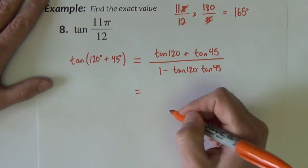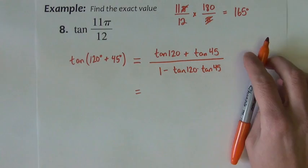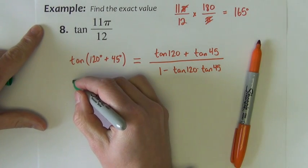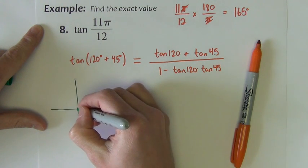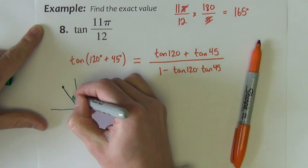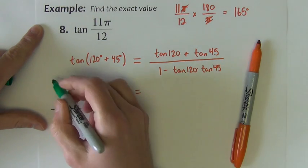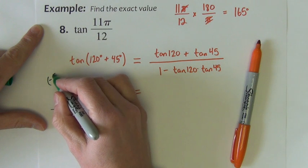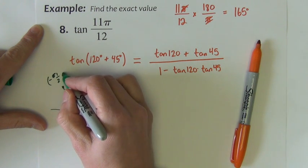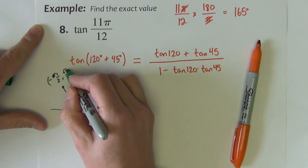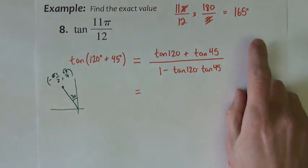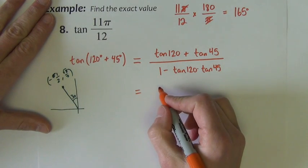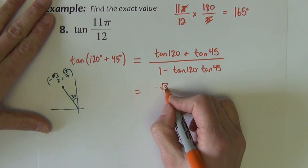Tangent of 120 degrees. Let's think through 120 degrees together, shall we? 120 degrees is this point that's 30 degrees past the y-axis. It's the point negative one-half square root of 3 over 2. So the tangent would be the y divided by x. That's going to be just simply negative square root of 3.